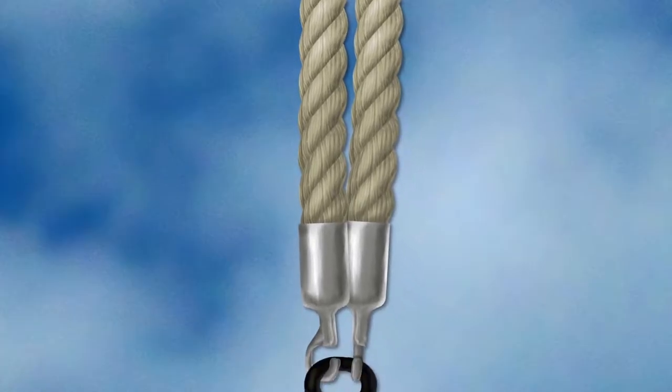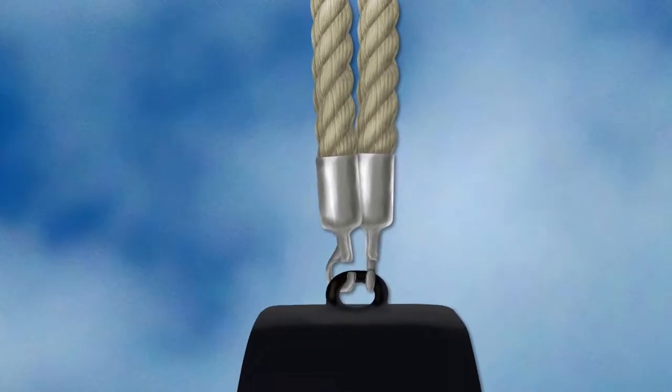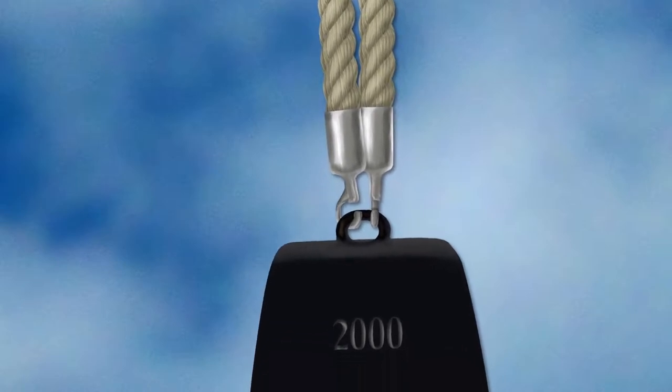So now imagine if you had two identical ropes, the force to break those would be 2,000 pounds, just twice as much because you've got twice the area.